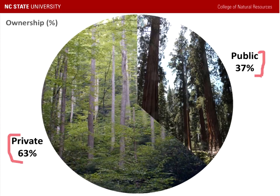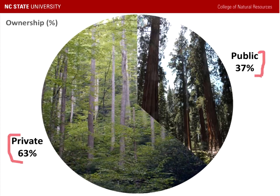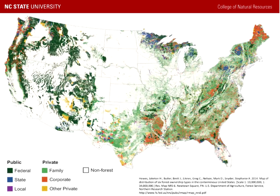Family forest owners include individuals, family trusts, estates, and family partnerships. Corporate ownership, as the name indicates, is owned by industry and other groups such as timber investment management organizations or real estate investment trusts. Then we have other private, which includes conservation and natural resource organizations — for example, the Nature Conservancy — or other unincorporated partnerships and associations such as a hunt club. Native American tribal lands also fall under other private.